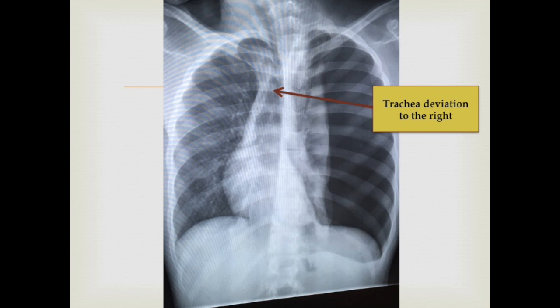They come with the two T's: tachypnea and tachycardia, elevated JVP, chest pain, and sometimes asymptomatic. On percussion, you will hear hyper-resonance.